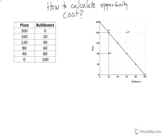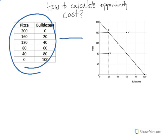Today what we want to do is calculate the opportunity cost and determine how we calculate the opportunity cost given the information provided in the schedule. What you're going to do is take the schedule and plot it on a production possibilities curve or possibilities frontier.